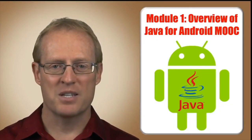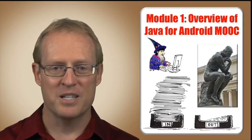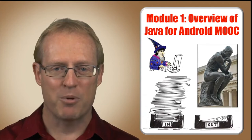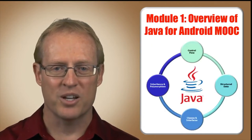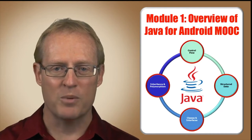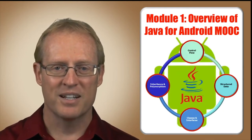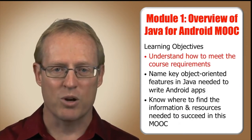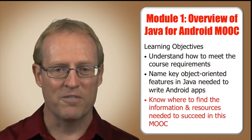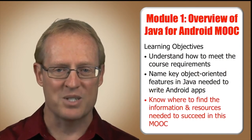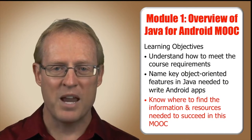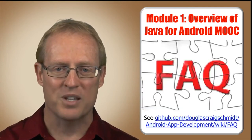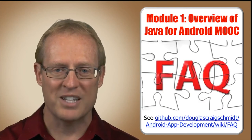Welcome to the first module in our MOOC on Java for Android, which summarizes the MOOC structure and contents, explains its prerequisites, workload, and learning strategies, and presents an overview of key features in the Java language, focusing on its support for object-oriented programming concepts used to develop Android apps. After completing this module, you'll understand how to meet the course requirements, name the key object-oriented features needed to write Android apps, and know where to find the resources you need. Much of this information is available in the FAQ website, so please read it carefully.